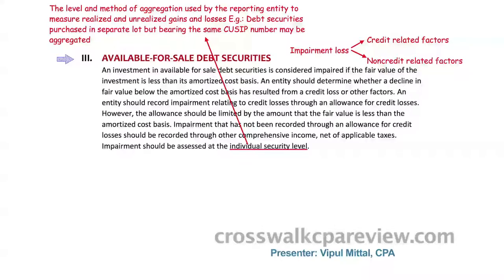So we did how to record credit losses in respect of financial assets recorded at amortized cost. Now, how will you measure credit loss in respect of available-for-sale securities that are measured at fair value? An investment in available-for-sale debt securities is considered impaired if the fair value of the investment is less than its amortized cost basis. In such a case, you should determine whether a decline in fair value below the amortized cost basis has resulted from a credit loss or other factors. The impairment may be due to credit-related factors, non-credit-related factors, or both.